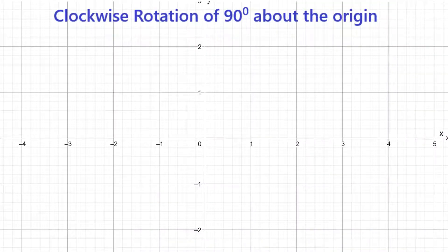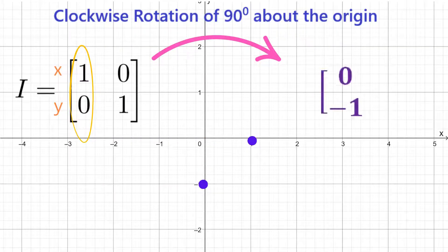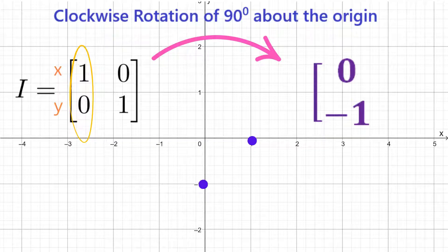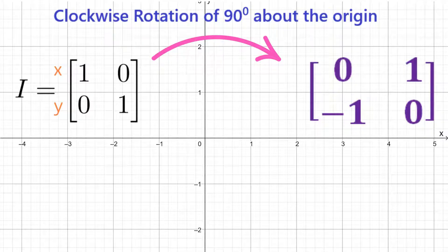Now let's put our focus on deriving the transformation matrix for each rotation. We will begin with a clockwise rotation of 90 degrees about the origin. In the identity matrix, the values in the first column represent the point (1, 0). Rotate this point 90 degrees clockwise and we'll end up at (0, -1). The second column represents the point (0, 1). Rotate (0, 1) 90 degrees clockwise and we'll end up at (1, 0), so the second column in the transformation matrix is (1, 0).